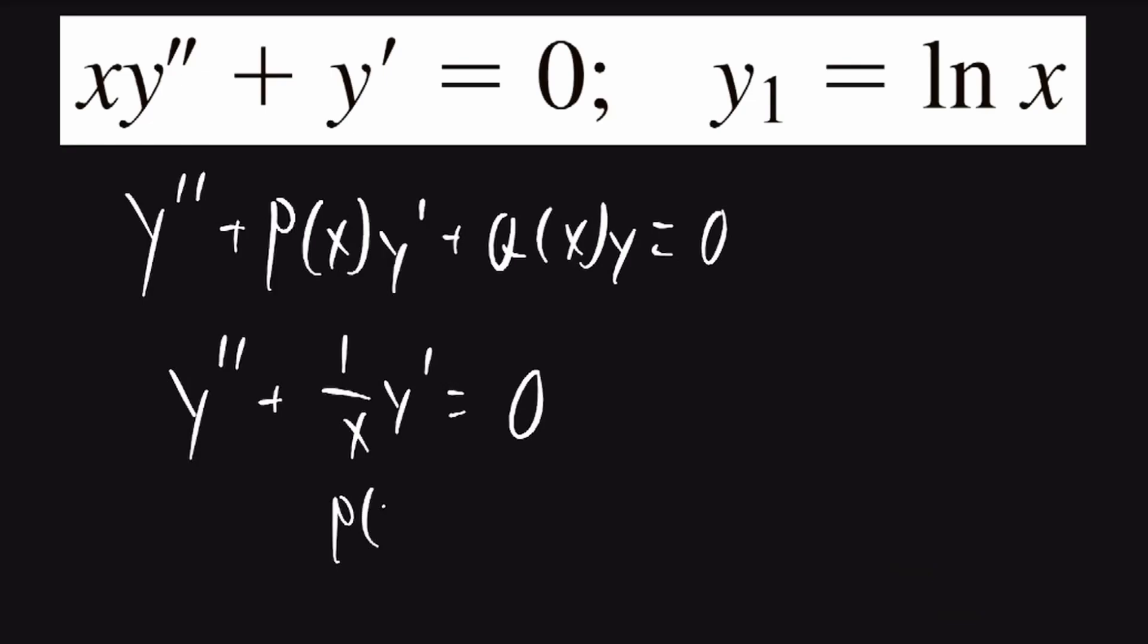So we know p of x is going to be equal to 1 over x because it's the coefficient of y prime. We can now use the reduction of order formula: y2 is equal to y1 times the integral of e to the negative integral of p of x dx over y1 squared.